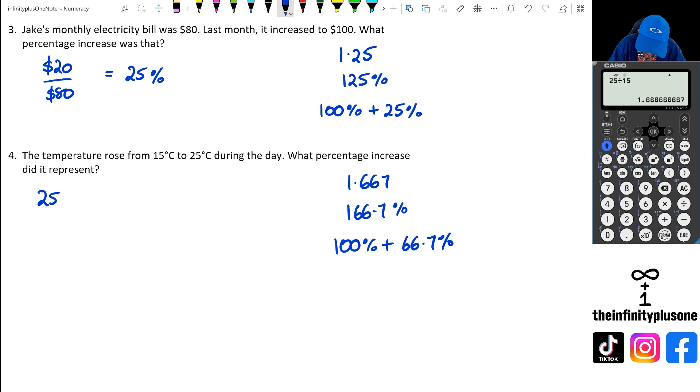But let's have a look at the old method. What we're going to do is go 25 minus 15, which equals 10 degrees. And then we're going to put 10 degrees out of 15, and convert that into a percentage. So if we do 10 divided by 15 and multiply that with 100, we're getting 66.67% increase.